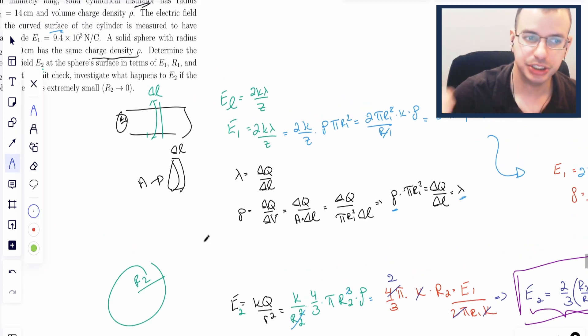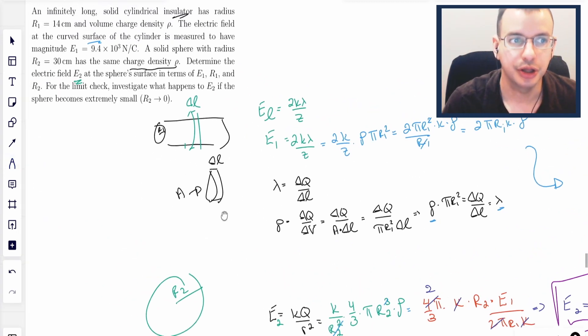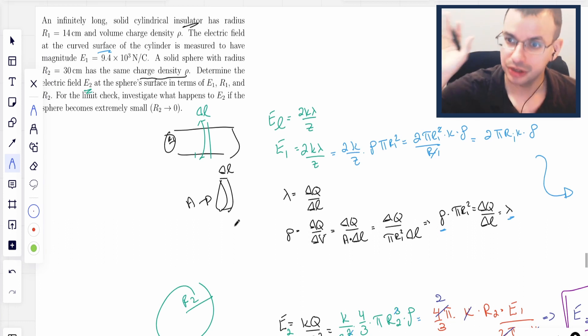To recap how we approached this: I drew a picture of what we wanted. We wanted the electric field, so I wrote out electric field. I had linear charge density, but was given volumetric charge density rho. So I looked at the relationship between linear and volumetric. Volume is length times area. I worked through that and did some algebra.